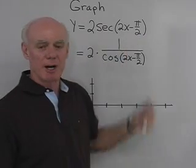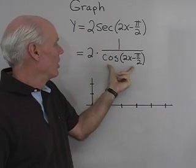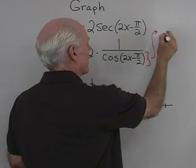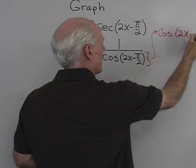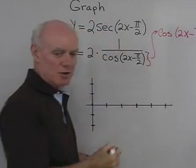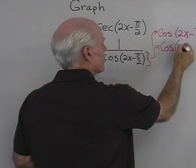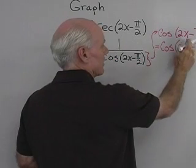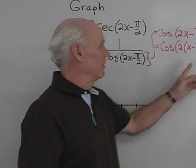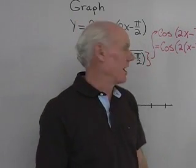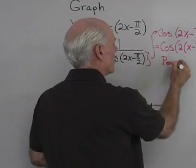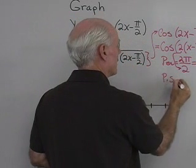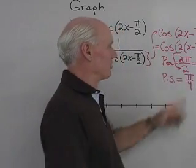Now let's look at y = 2 sec(2x − π/2). I'll use the reciprocal relationship and write this as 2 times 1 over cos(2x − π/2). First, let's work on cos(2x − π/2), which equals cos(2(x − π/4)) after factoring out the 2. The period is 2pi/2 = pi, and the phase shift is π/4.